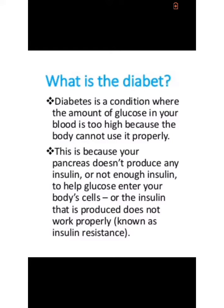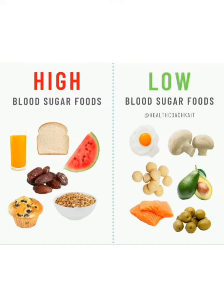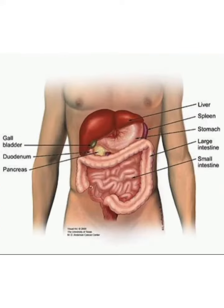So guys, what do you think is diabetes? Diabetes is a disease in which our blood glucose, or our blood sugar levels, are too high. Glucose comes from the food we eat — for example, sugary juices, snacks, white bread, rice, just to name a few.